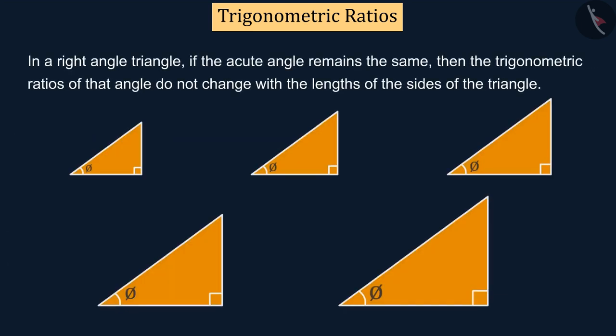Based on this activity, we can say that in a right angle triangle, if the acute angle remains the same, then the trigonometric ratios of that angle do not change with the lengths of the sides of the triangle.